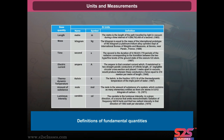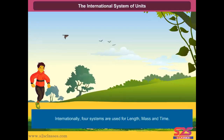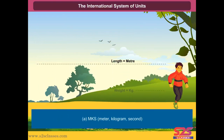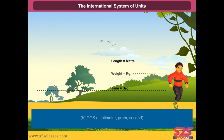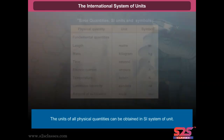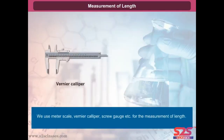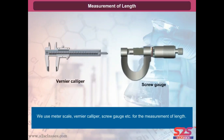Look at the definitions of fundamental quantities carefully. Internationally, four systems are used for length, mass, and time. The units of all physical quantities can be obtained in the SI system of units. Have a look at the base quantities, SI units, and their symbols. We use meter scale, vernier caliper, screw gauge, etc., for the measurement of length.